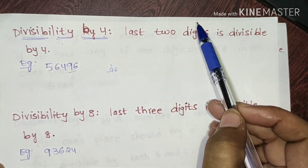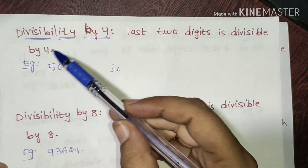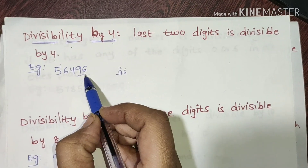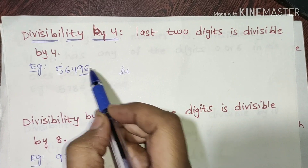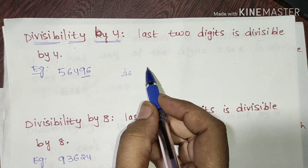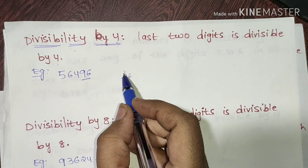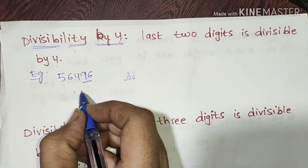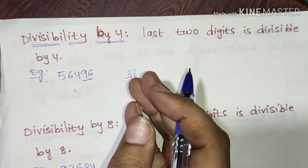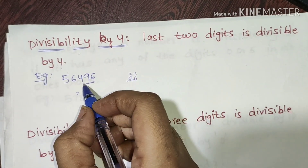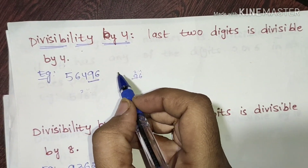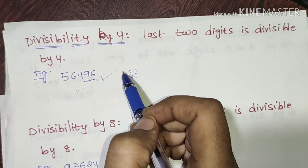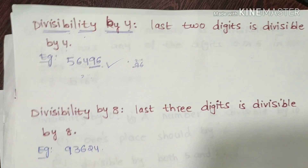Divisibility by 4: the last two digits of the number must be divisible by 4. For example, if the last two digits are 96, since 96 is in the 4 times table (4 × 24 = 96), the number is divisible by 4.